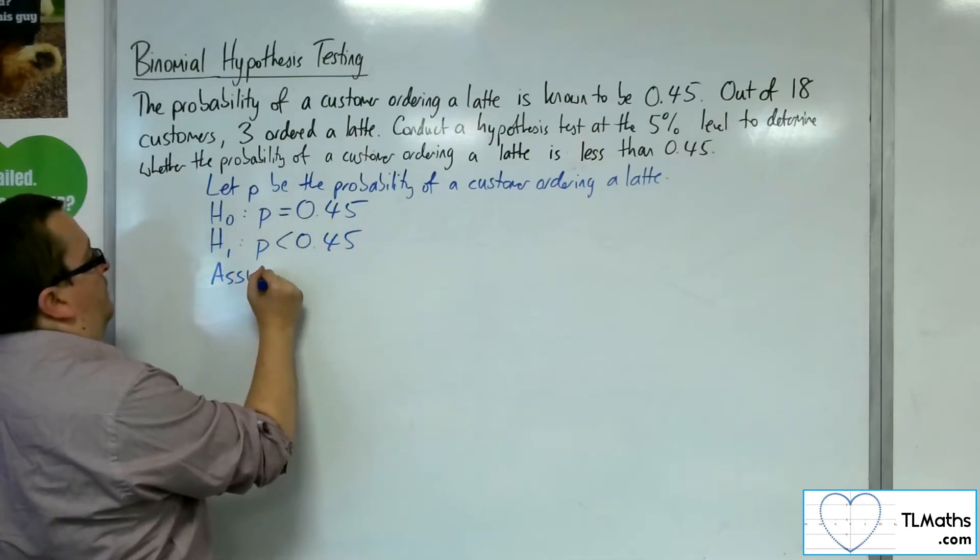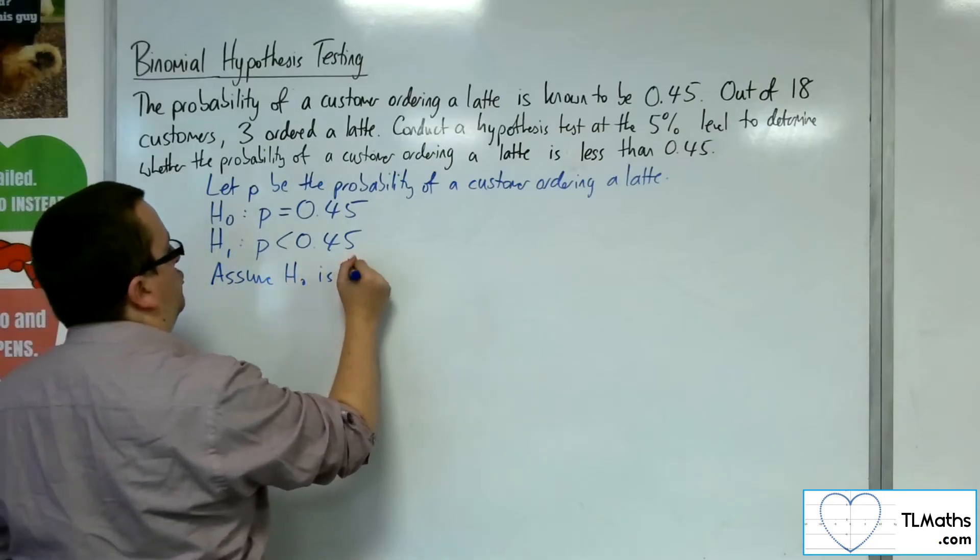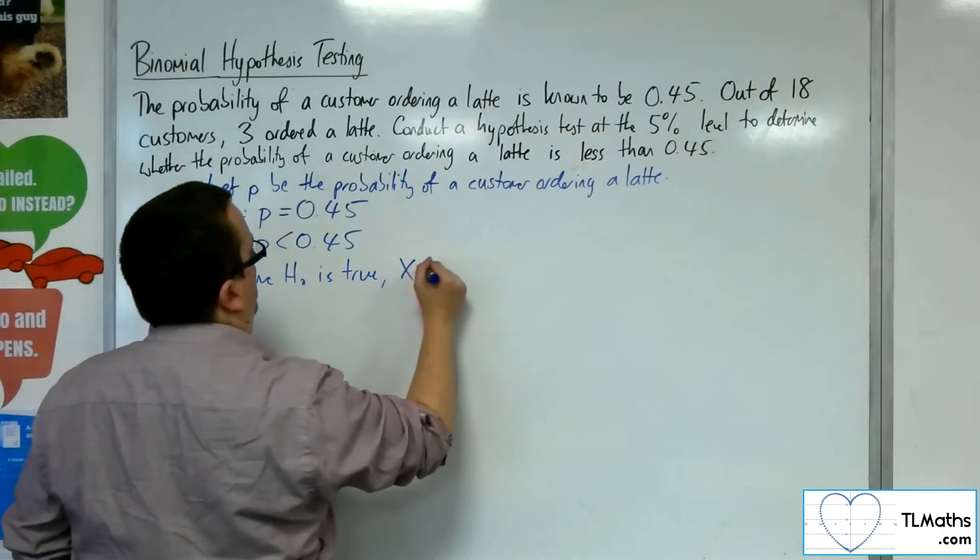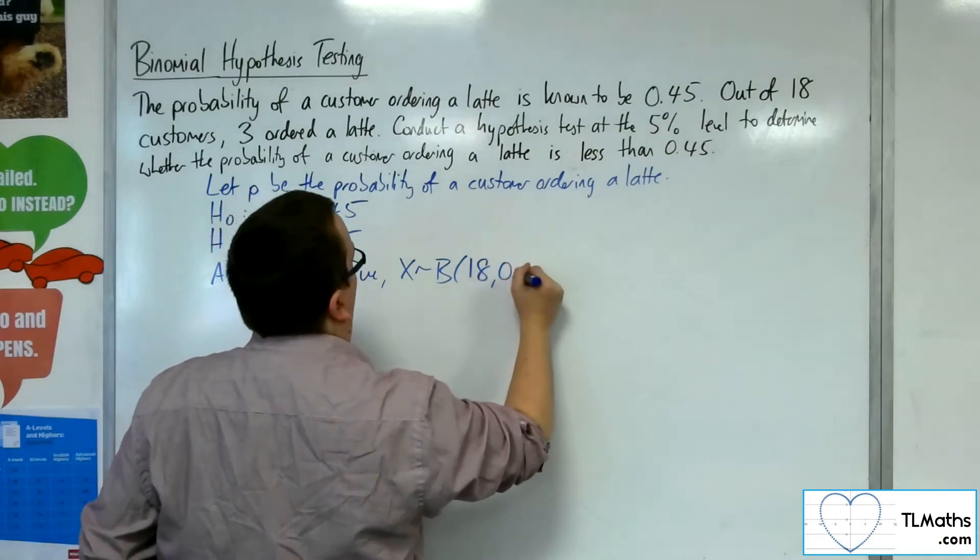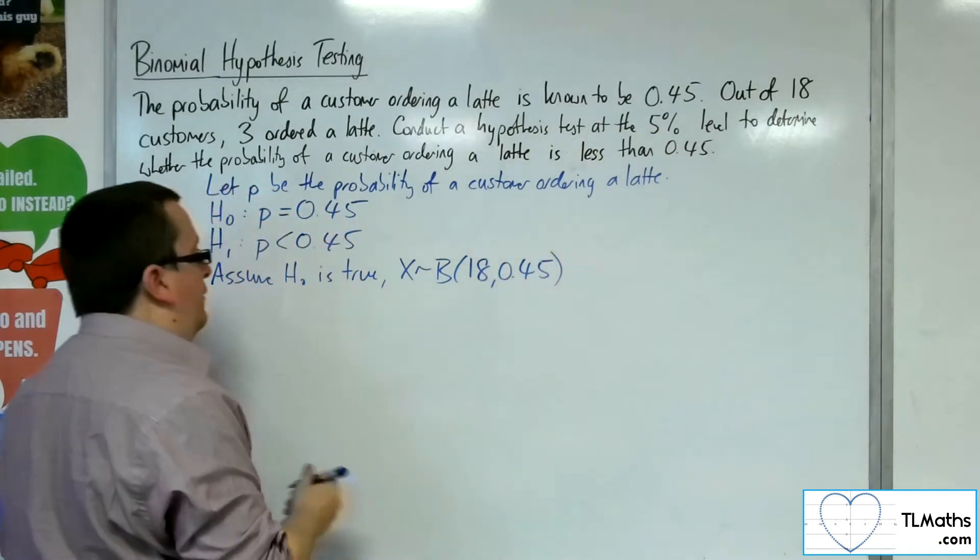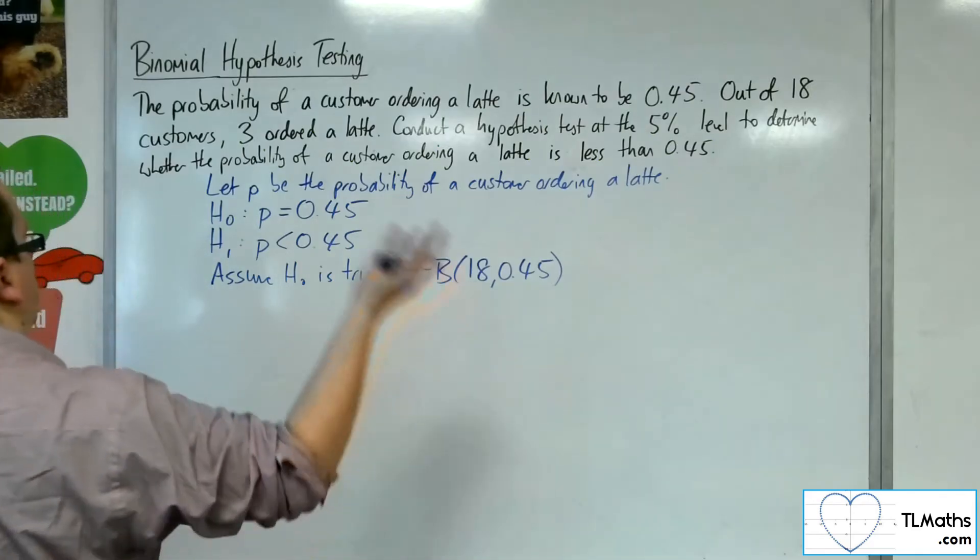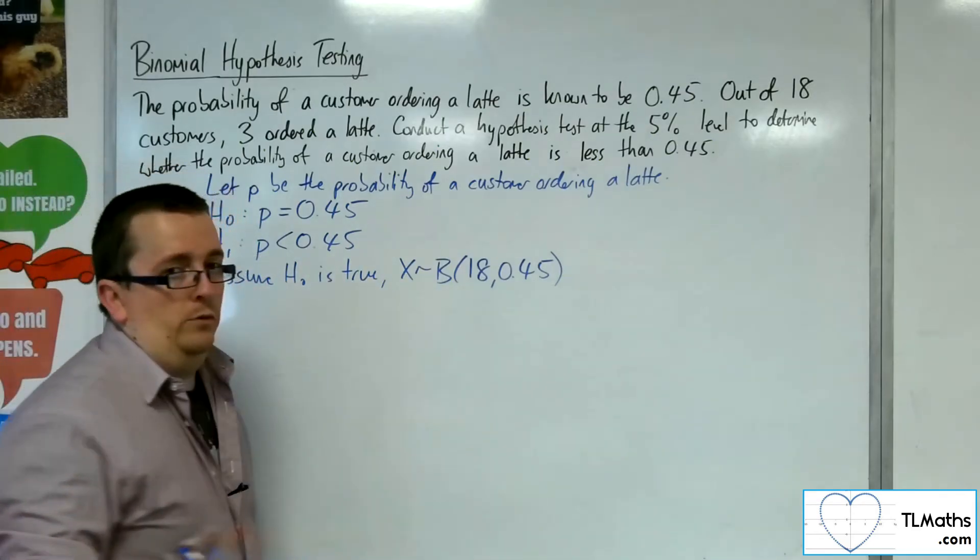We assume H0 is true and set up a binomial distribution with N equals 18 and probability equals 0.45. This is all the same as we're used to.